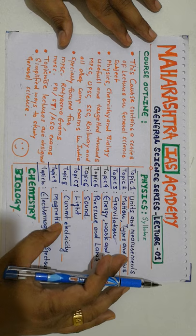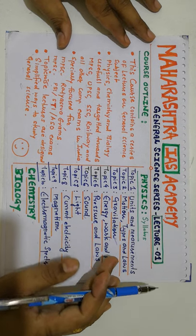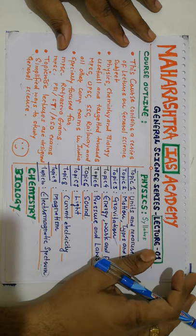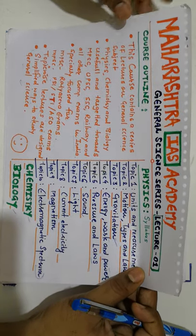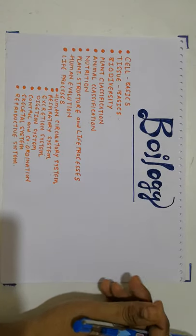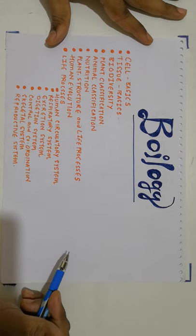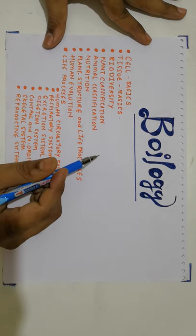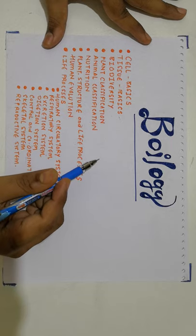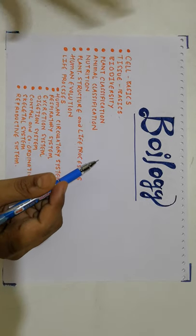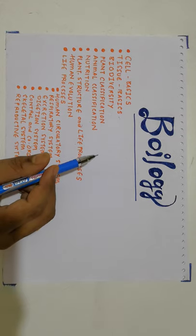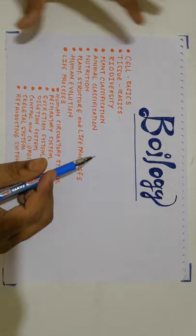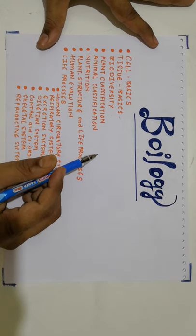Followed by the syllabus of Physics, let me discuss the topics of Chemistry and Biology. Now let us talk about the next subject — Biology. As you can see, we are going to discuss the same important and highly valuable topics of Biology. Biology is a very different subject compared to Physics, and we must understand the frequency of the subject by being thorough with the syllabus content.